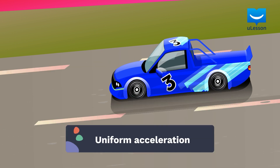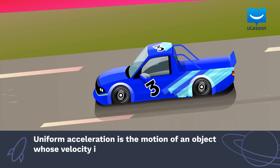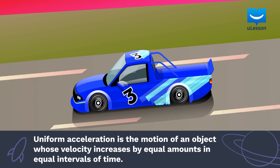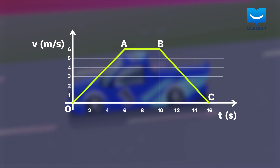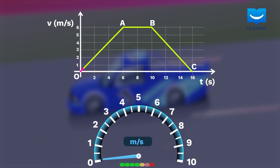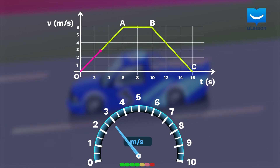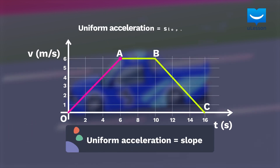The first is uniform acceleration. Uniform acceleration describes the motion of an object whose velocity increases by equal amounts in equal intervals of time. If you look at the graph on the screen, you will notice that between points O and A, the velocity increases by 2 meters per second every 2 seconds. It started at 0 meters per second, then climbed to 2 meters per second 2 seconds later, then 4 meters per second 2 seconds later, and finally 6 meters per second 2 seconds later. This is what uniform acceleration looks like.